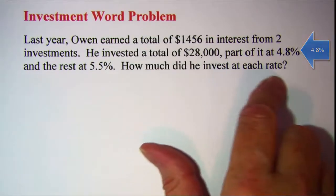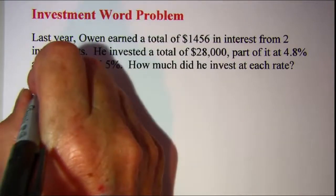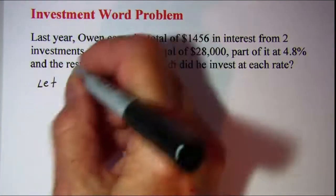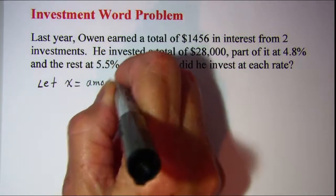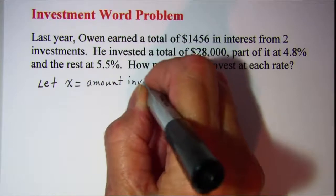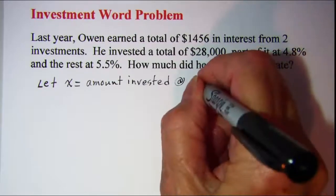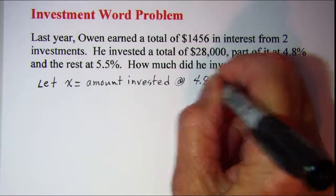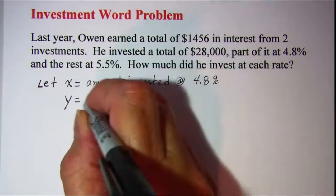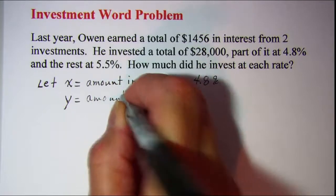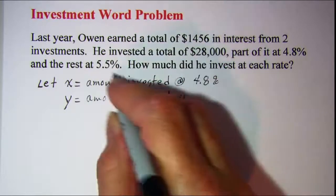How much did he invest at each rate? I am going to first assign my variables. Let x equal the amount invested at 4.8% and let y equal the amount invested at 5.5%.